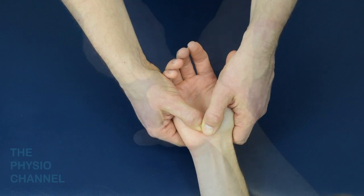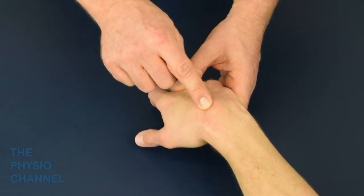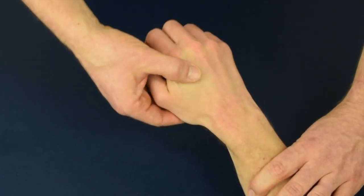When the capitate is subluxed, it becomes more prominent at the base of the third metacarpal when the wrist is flexed. As a result, this can also cause pain and limitation with passive end range wrist extension.